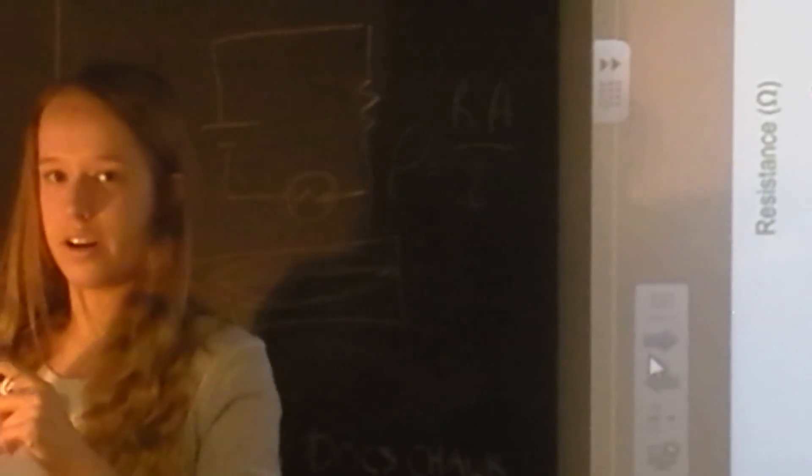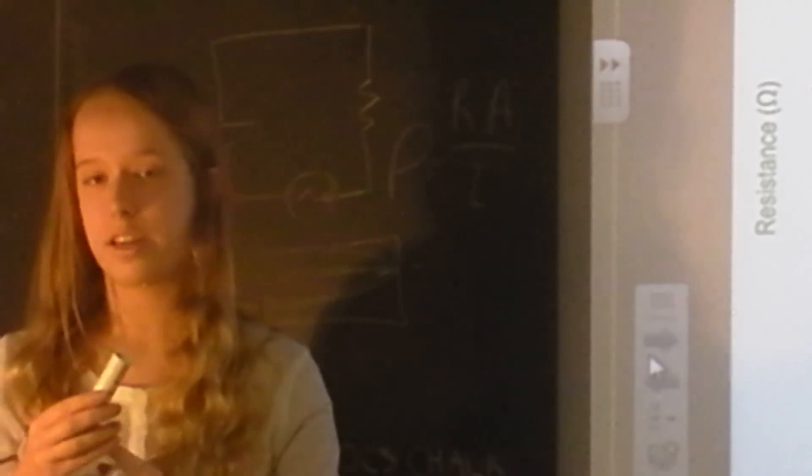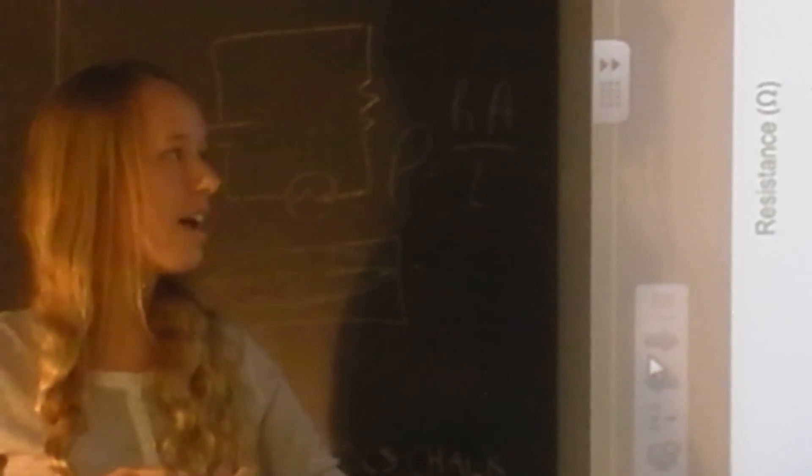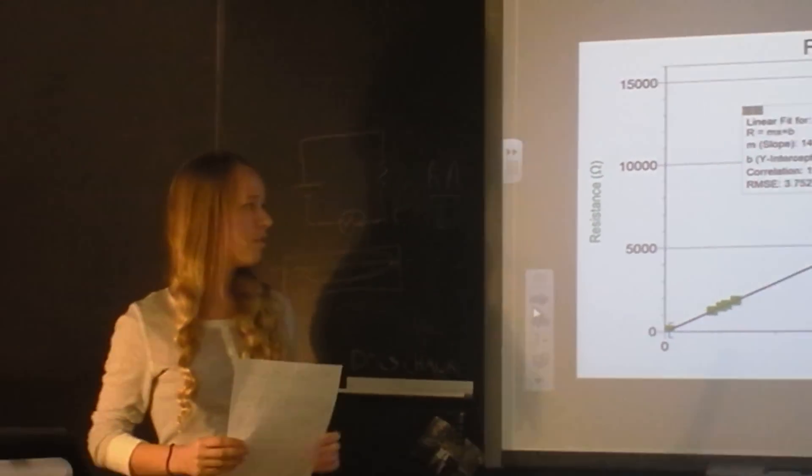And basically the equation for the resistivity is resistance times area over the length. And so the area was how big the surface area of this circle. And then the length is the length of my container. And since I kept those constant, they didn't affect this graph.